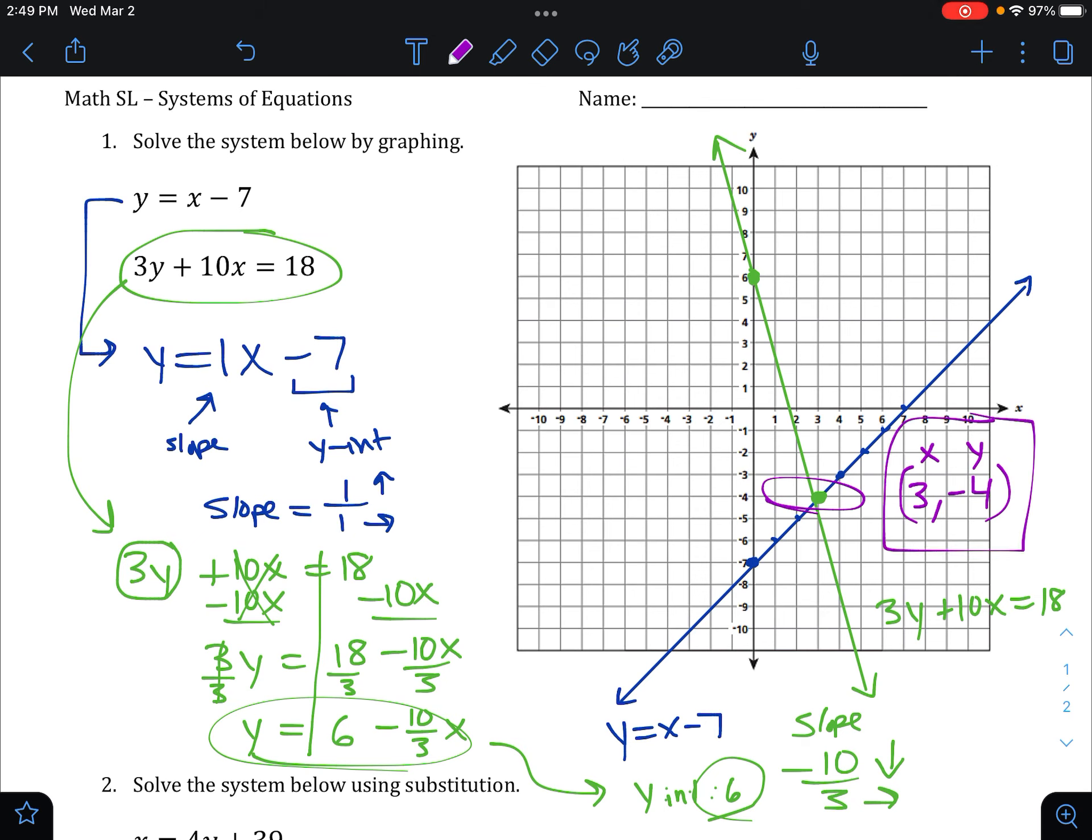A system always has two or more, potentially, solutions. Because we have two equations, we have two unknowns, an x and a y. There's our two answers for x and for y.